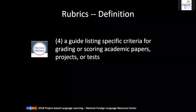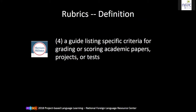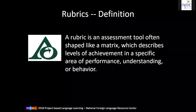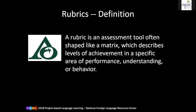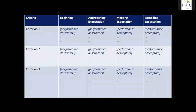First, let me show you the definition of rubrics. According to the Merriam-Webster dictionary, rubrics is a guide listing specific criteria for grading or scoring academic papers, projects, or tests — so it's specific criteria for grading. In our assessment office at the University of Hawaii at Manoa, we have a much more descriptive definition. We define rubric as an assessment tool, often shaped like a matrix, which describes levels of achievement in a specific area of performance, understanding, or behavior.